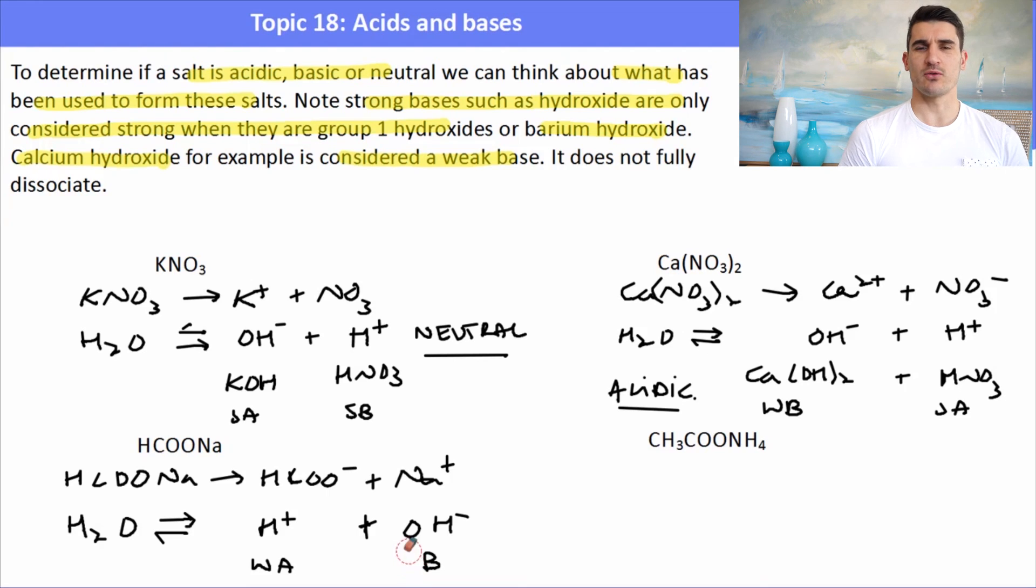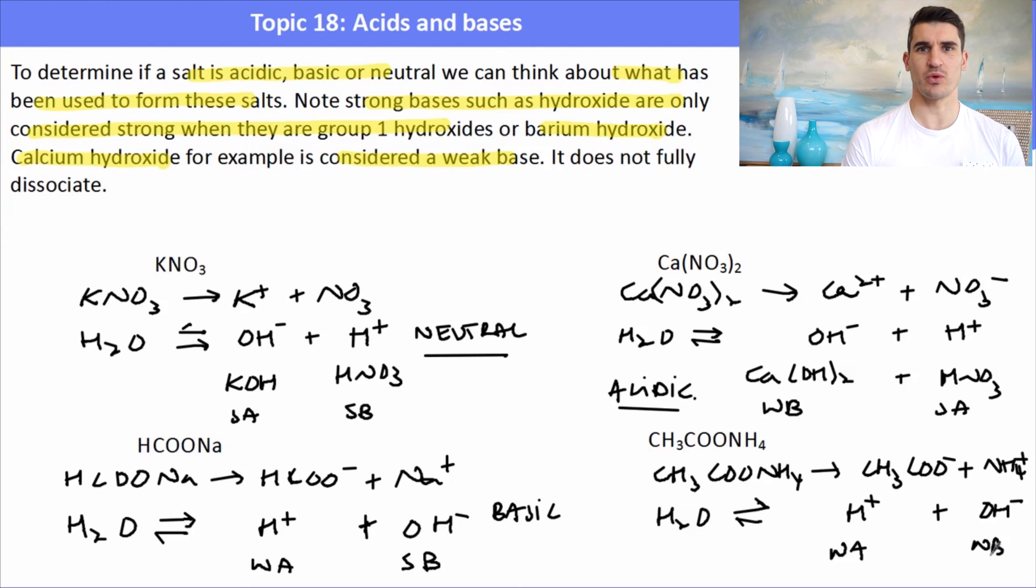For the final one, we have ammonium ethanoate. Ammonium ethanoate will dissociate into ethanoate ions and ammonium ions. Then if we add in the self-ionization of water, we'll have the H2O going to ethanoic acid and then we would also form some ammonium hydroxide. What will happen here is we've essentially got a weak acid and a weak base. That means that this will be approximately neutral. In fact, we'd have to have a look at the pKa and pKb values to work that one out.